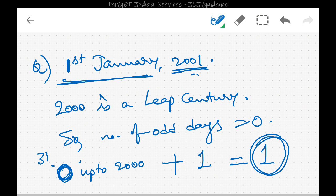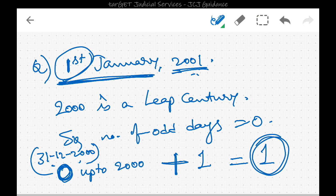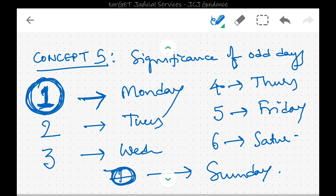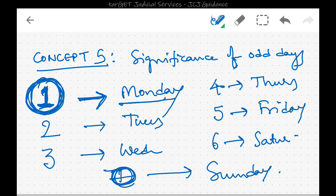To clarify: 0 odd days covers up to 31st December 2000. To find the day of the week for 1st January 2001, we add 1 for that first day, giving a total of 1. Since 1 corresponds to Monday, 1st January 2001 was a Monday. The mapping is: 1 → Monday, 2 → Tuesday, 3 → Wednesday, and so on, with 0 → Sunday.